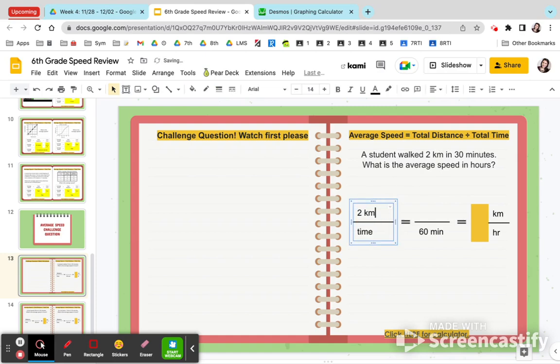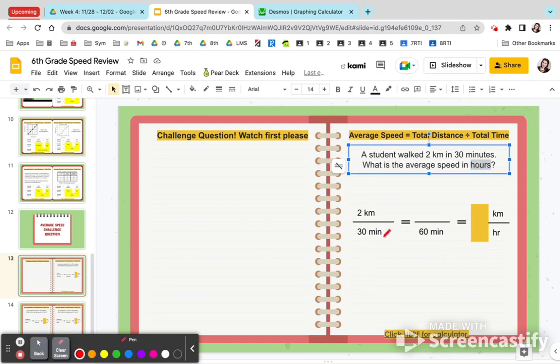So two kilometers in 30 minutes, but the question is asking what is it in hours. So we're going to have to do a little extra math. We know that there's 60 minutes in one hour, so in order to get from 30 to 60, we multiply by two times two. Whatever we do to the bottom, we do to the top.